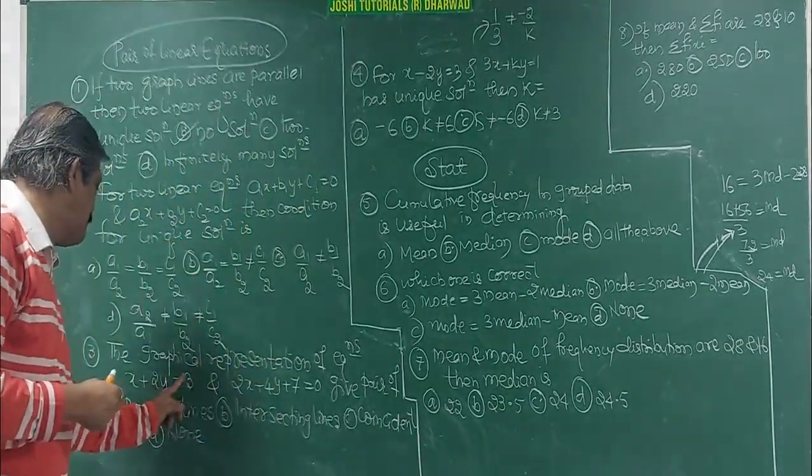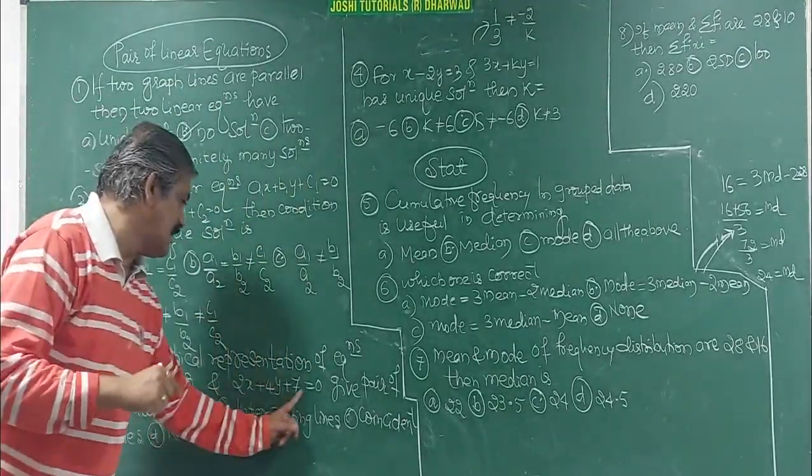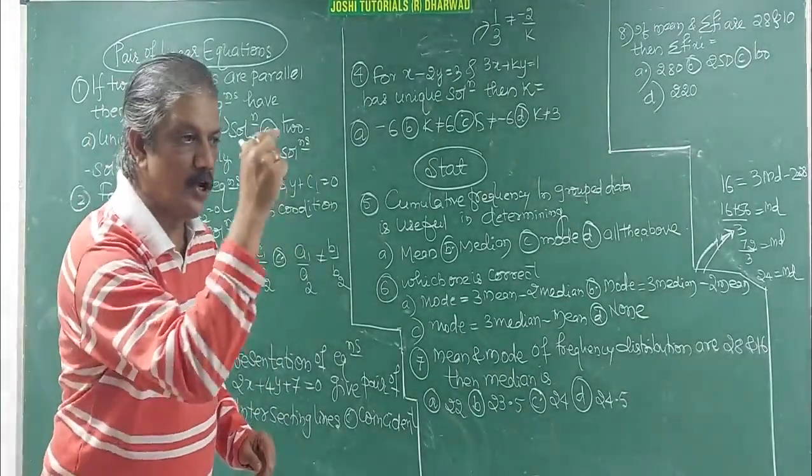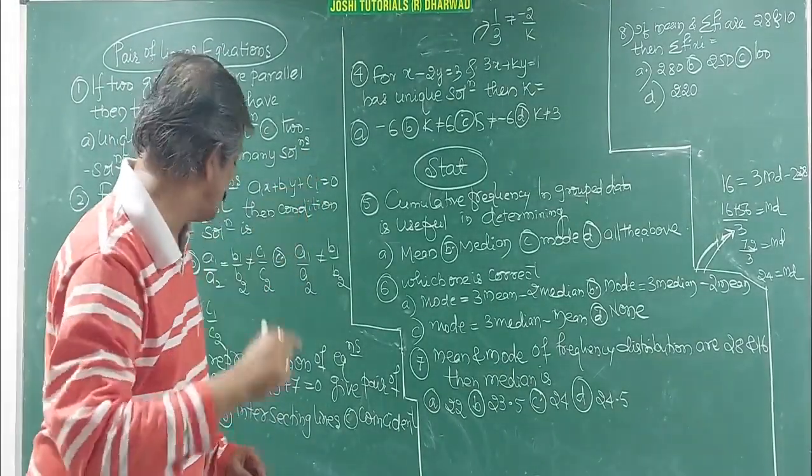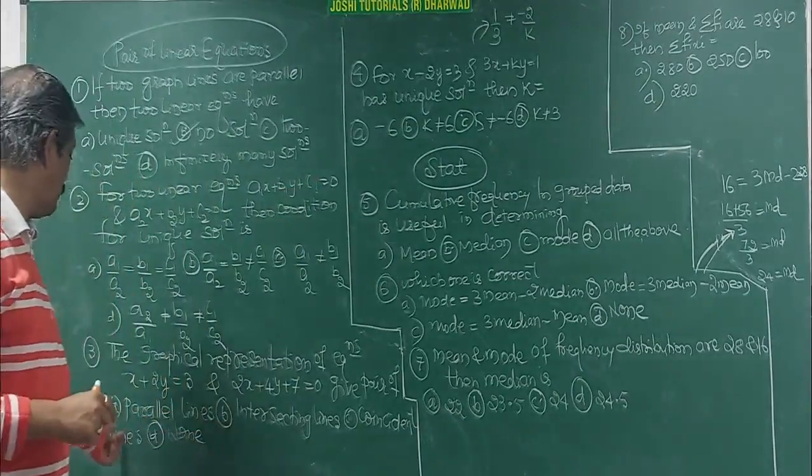And if you take here minus 3, here 7, minus 3 by 7 not equal to C1 by C2. So they are, what you call, parallel lines.